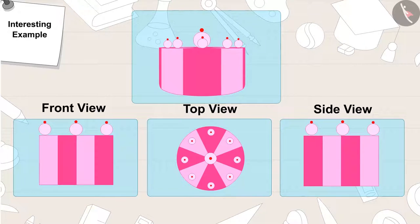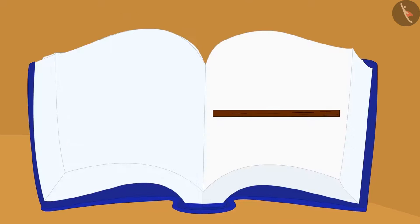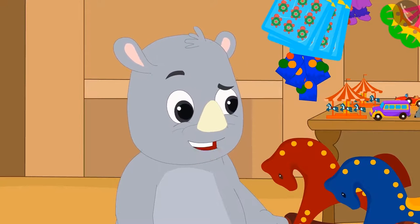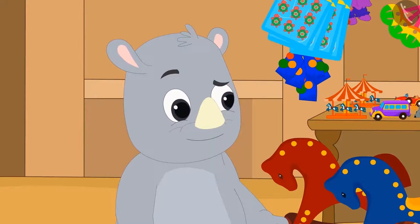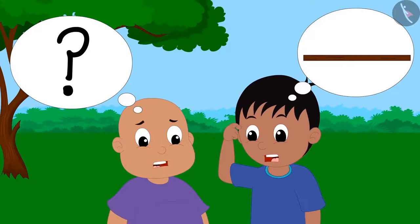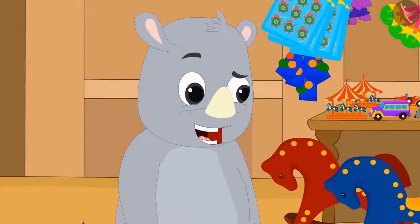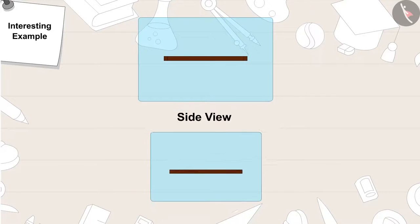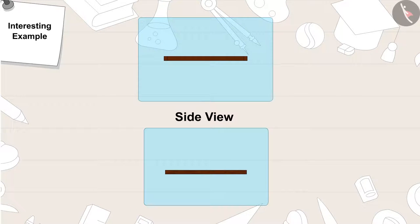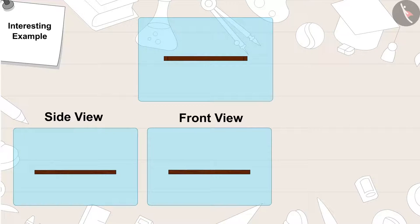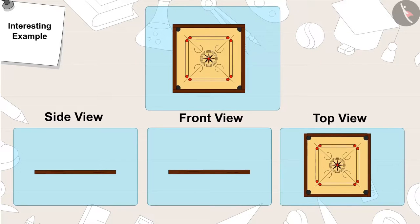Gagu said, 'This is your last picture. Let's see if you can at least identify this object.' Raju and Bablu did their best but could not identify the object. They were embarrassed and said, 'We don't know this one either.' Gagu laughed: 'You lost! This is a carom board. A carom board looks like this from the side, like this from the front, and like this from the top.'